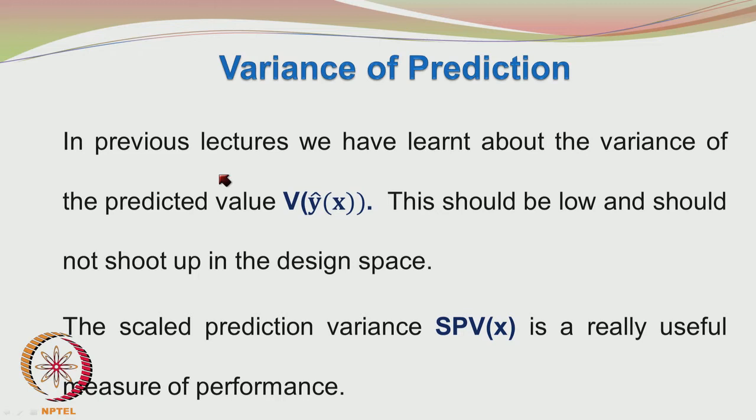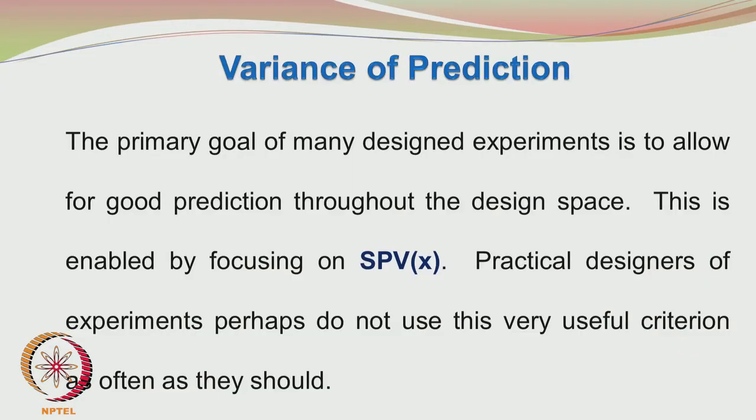We have talked at length about the scaled prediction variance, which is a useful measure of performance. The variances of the predictions should be kept under control, and even if there are certain regions where they become unbounded, we have to relook at the experimental design strategy. Scaled prediction variance control helps us to make reliable predictions in the experimental design space. Unfortunately, in many experimental design analyses, the scaled prediction variance is not given as much attention as it should be.